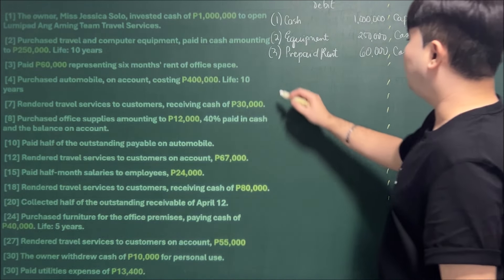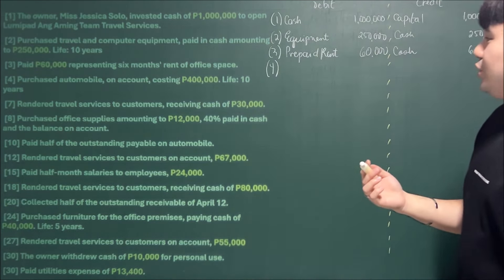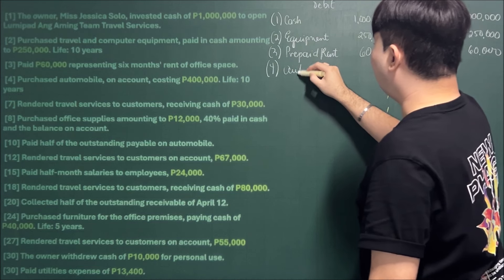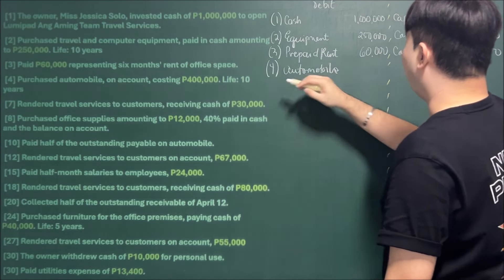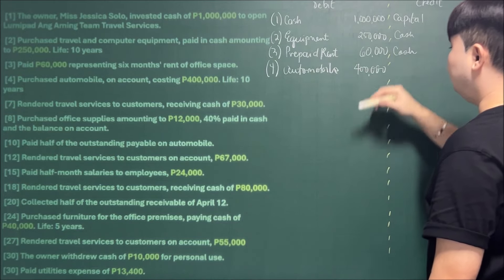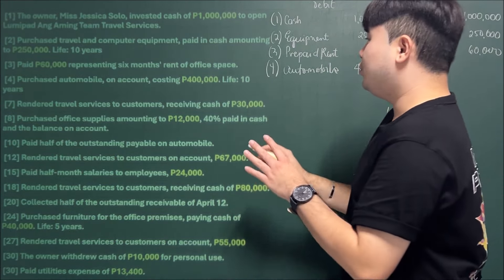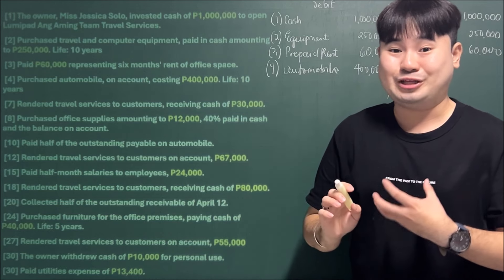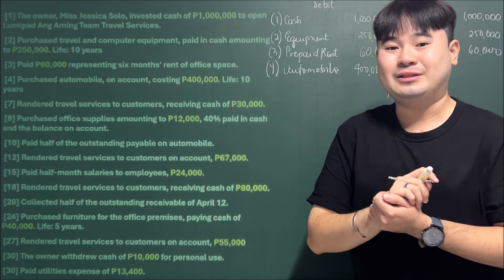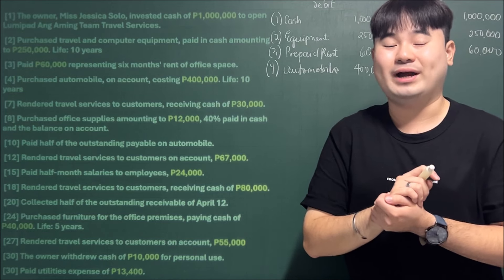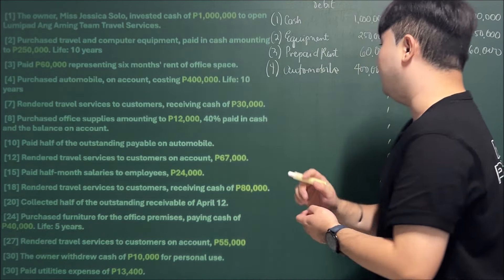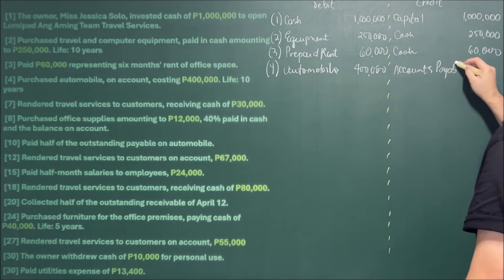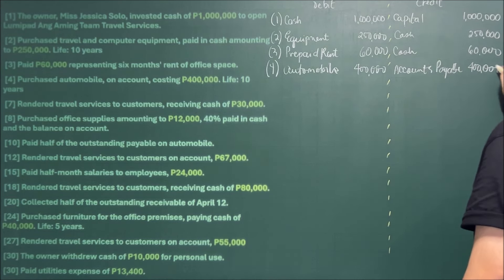Next transaction, April 4: Purchased automobile on account costing 400,000. We debit Automobile for 400,000. Since it was purchased on account — meaning we haven't paid cash yet — this is an obligation to pay in the future, which is a liability. So we credit Accounts Payable for 400,000.